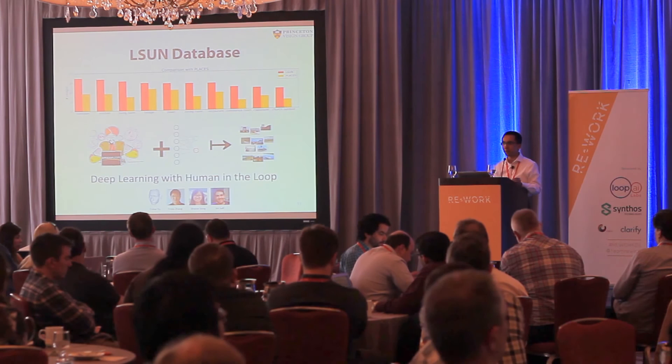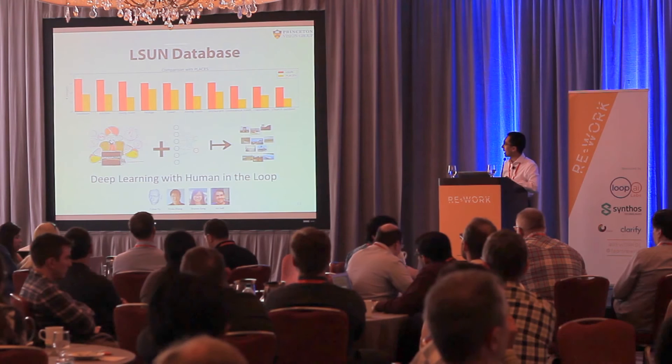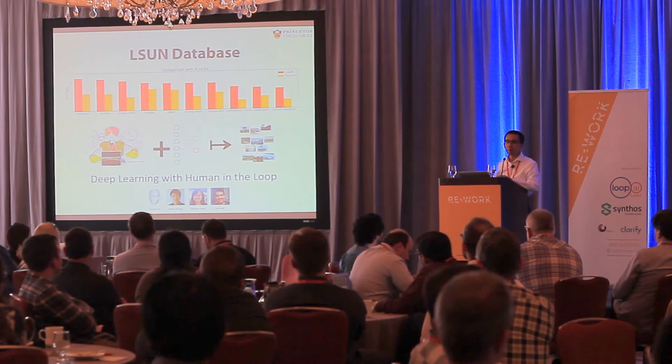And with more and more data and deeper and deeper networks, you can attain much, much better performance. So naturally, our next step is to build a bigger dataset and train an even deeper network. We built a large-scale scene understanding database that is one to two orders of magnitude bigger than the Places database to train a deeper network. But using that many images requires a lot of labels, and we were running out of labels. So we do deep learning with humans in the loop to gather labels. With this bigger database, we can train a better model and get significant performance improvement.